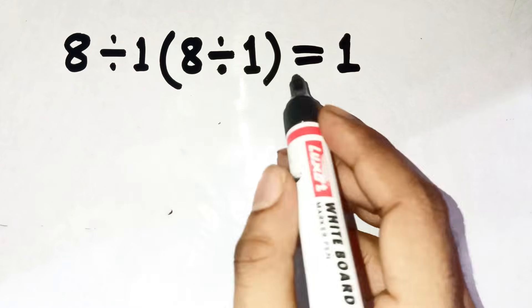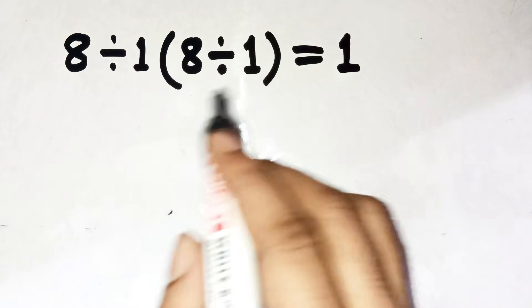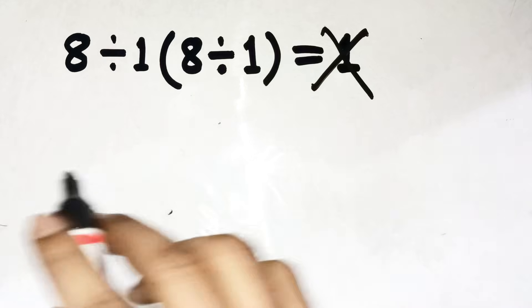Almost everyone jumps straight to 1, but that's a huge mistake. Yeah, seriously.